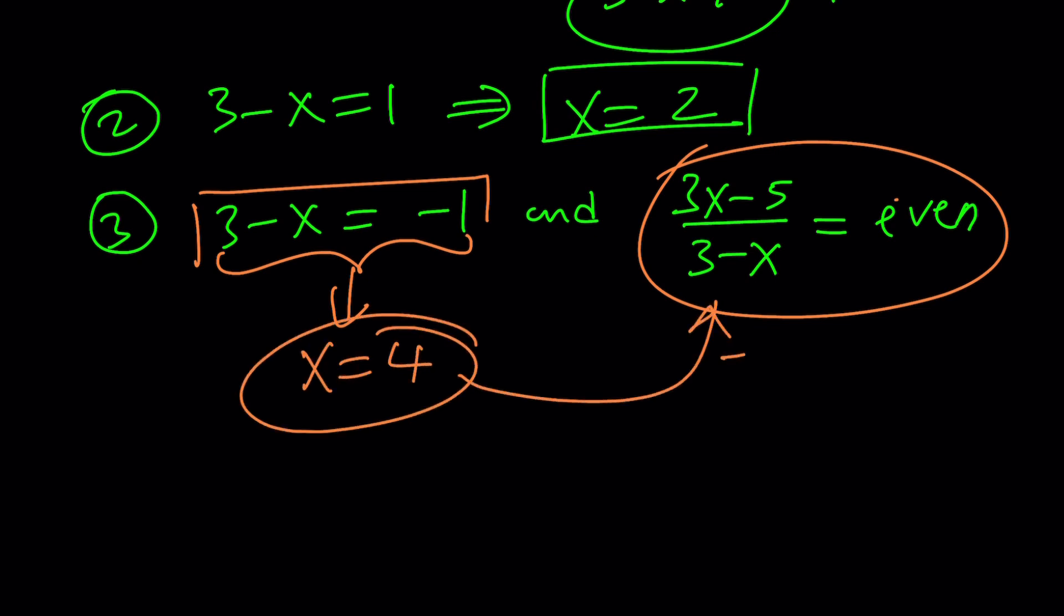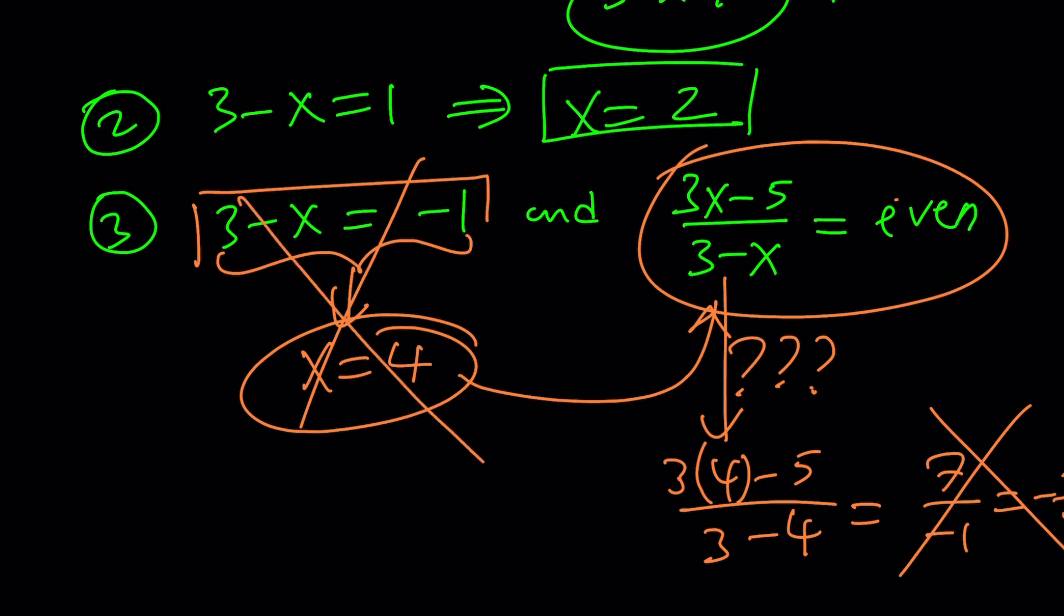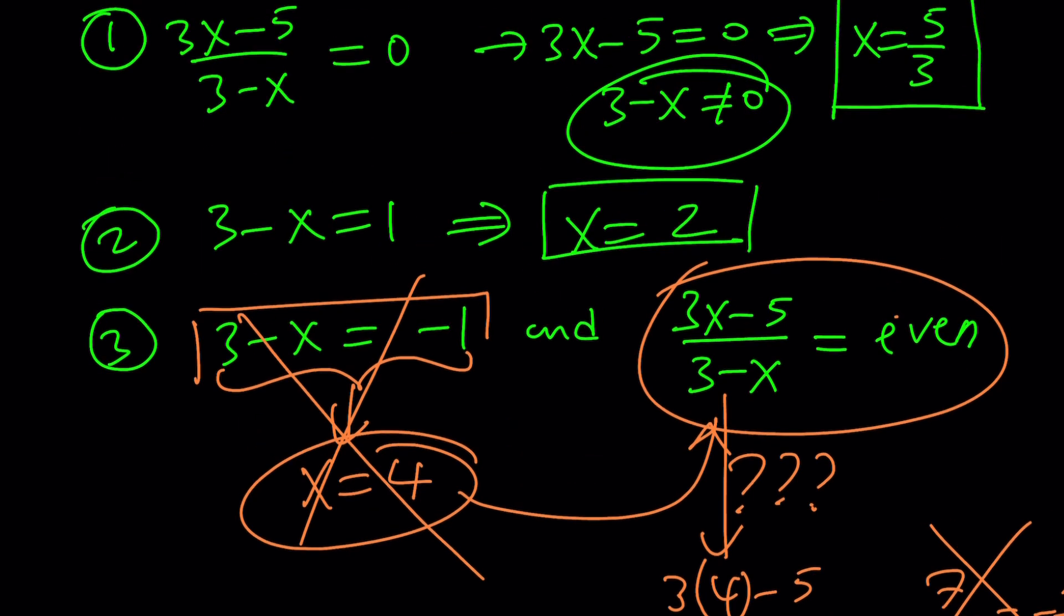Well, for x equals 4, is this even? That's the question we need to ask. I don't think I need to write that again. So question mark, question mark, question mark. Let's find out by substitution. 3 times 4 minus 5, divide by 3 minus 4. 3 times 4 is 12. I was going to say 7, but that's 12 minus 5, and 3 minus 4 is negative 1, and 7 divided by negative 1 is negative 7. Uh-oh, negative 7 is not even, so x equals 4 is not valid. Case number 3 does not give us anything. Make sense? It's not a solution. We don't care, right?